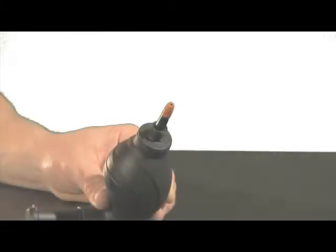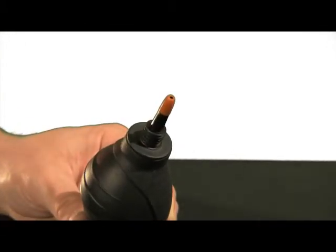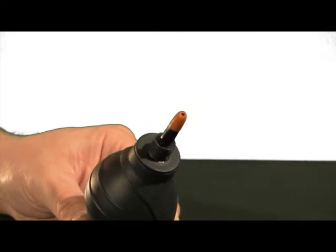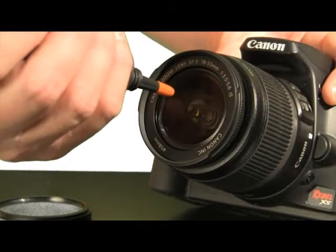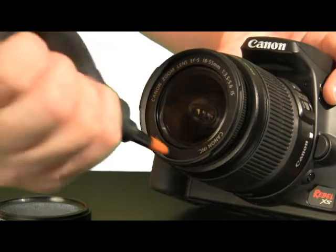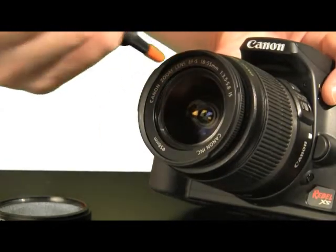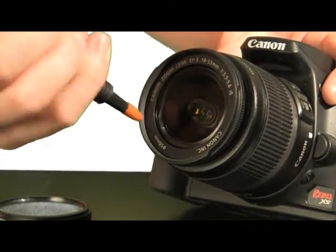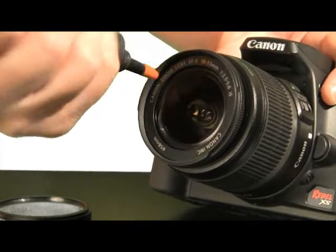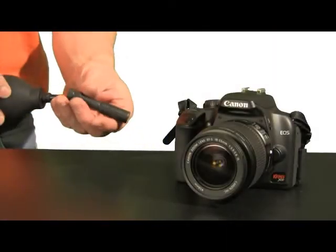It's best to use the blower tool first to remove any abrasive dust that could scratch your lens if simply wiped with a cloth. Squeeze the ergonomic handle directly over and around the lens and the Ultra Lens Cleaner gives off a powerful gust of air, removing loose particles. The tip is made out of ultra soft rubber, so don't worry if you accidentally touch the lens.